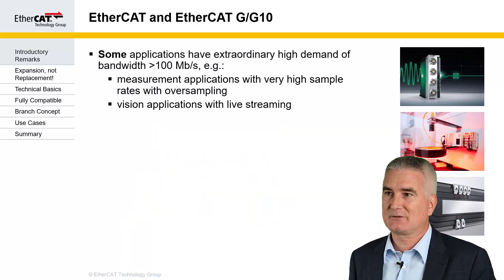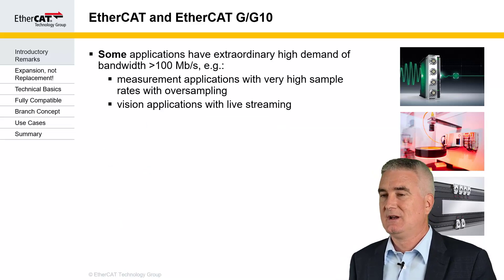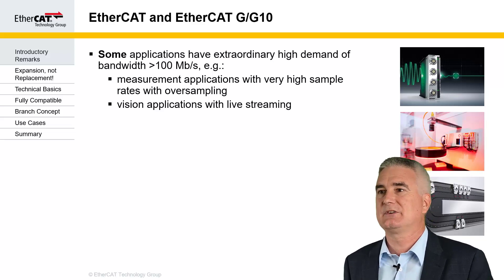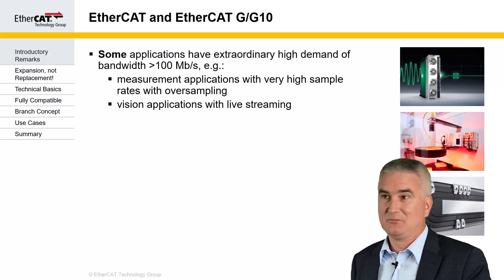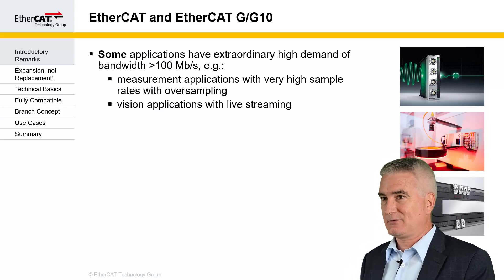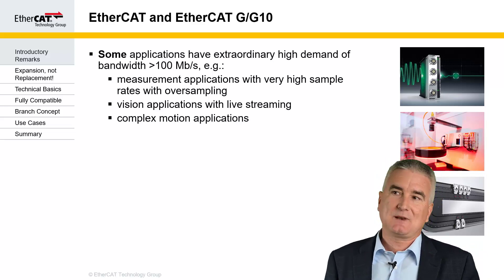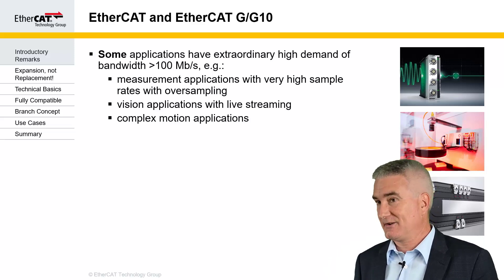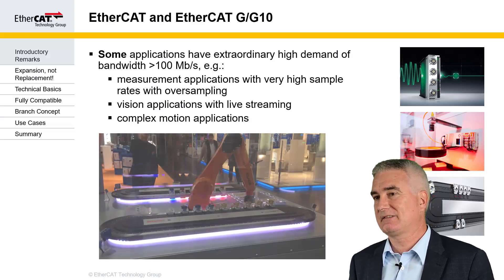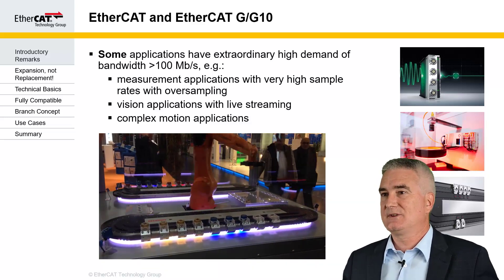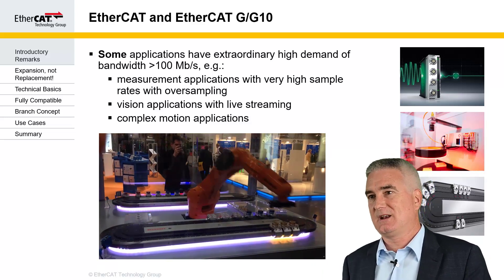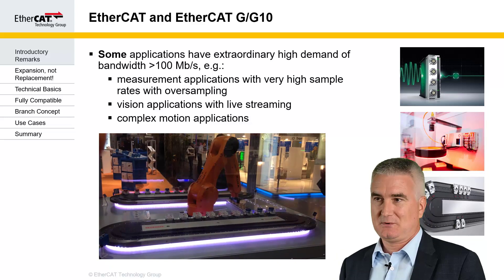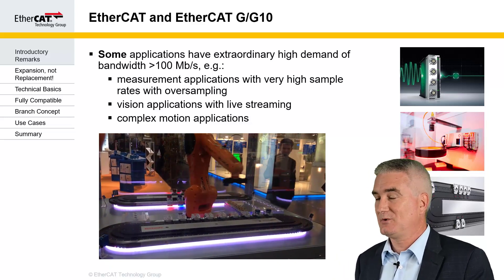Another example is cameras with live streaming. If you have a smart camera which does the image processing inside the camera and just reports the result of that image processing over the fieldbus network, you don't need a lot of bandwidth. But as soon as you start streaming video over the network, you need a lot of bandwidth. Then there are complex motion applications that require a lot of bandwidth. One example is the Beckhoff XTS system, where 3 meters of that transport system requires 64 megabit per second net data throughput. If you have a long system like that, you need multiple EtherCAT networks to handle this, or you need more bandwidth.